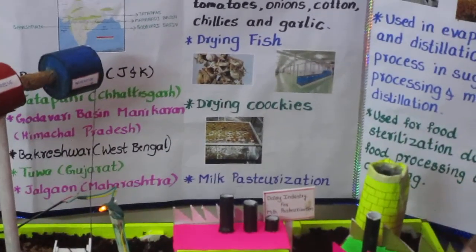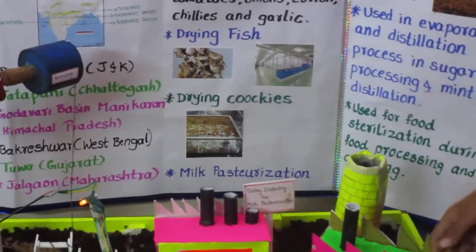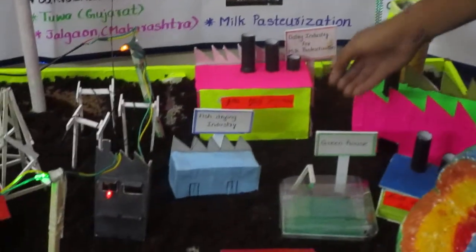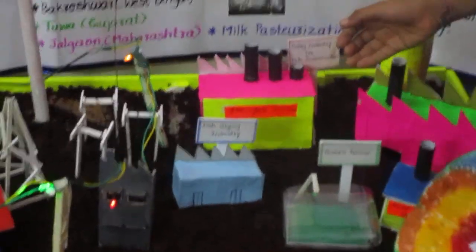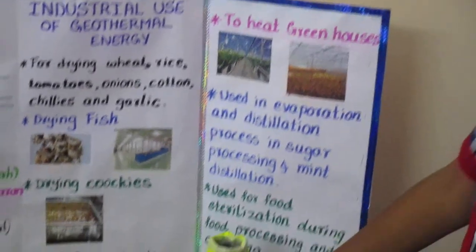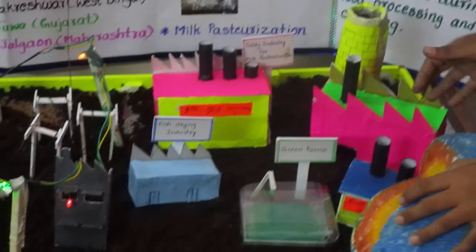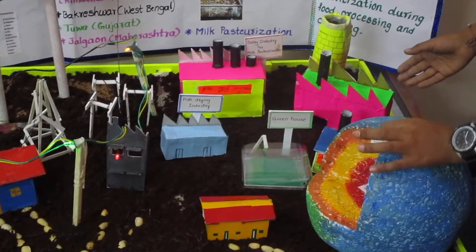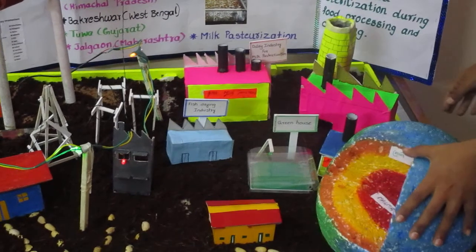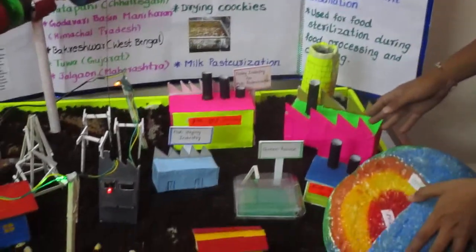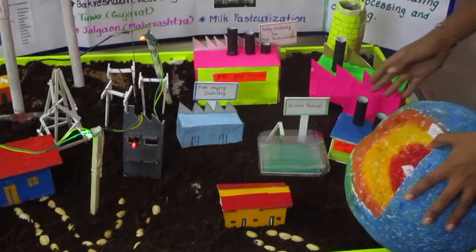Second, we can use it for drying fish and timber. We can also use it for drying cookies, milk pasteurization, heating greenhouses, evaporation and distillation processing, sugar processing, mint distillation, and food sterilization during food processing and canning.